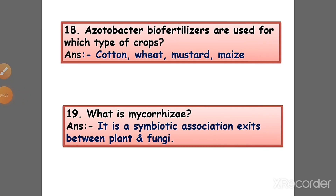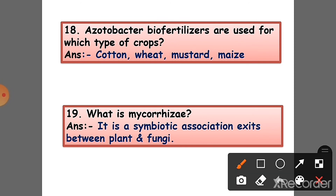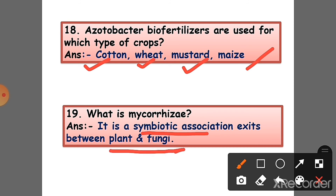Question 18: Azotobacter biofertilizers are used for which types of crops? Answer: Cotton, wheat, mustard, and maize. Question 19: What is Mycorrhizae? Answer: It is a symbiotic association between plant and fungi.